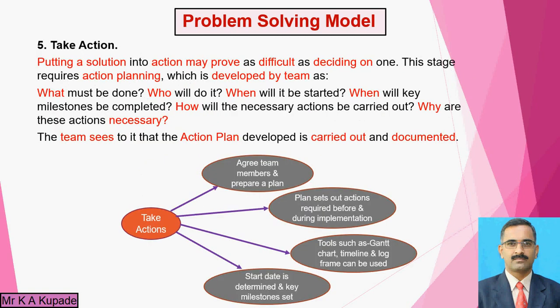Now by considering the fourth step, it is time to apply that particular solution — that means we are implementing it. The fifth step, the fifth model, is take action. We are putting the solution into action, which may prove as difficult as deciding on one. This action technique is a very difficult task compared to taking the decision. We are directly implementing the chosen best solution, and this stage requires some sort of action planning. Without action planning, you cannot do this particular task.